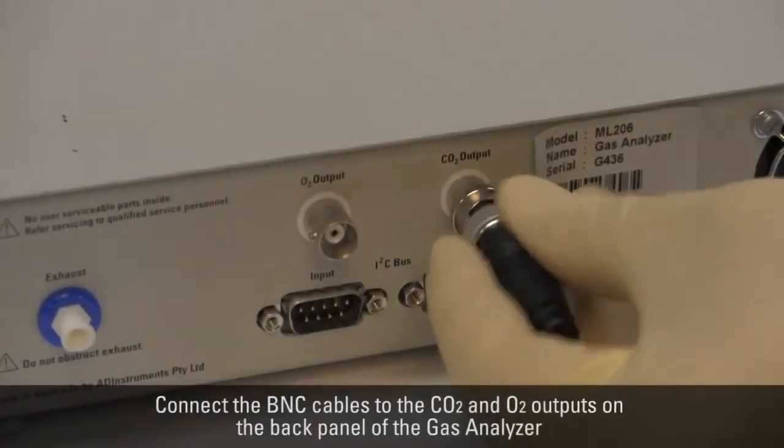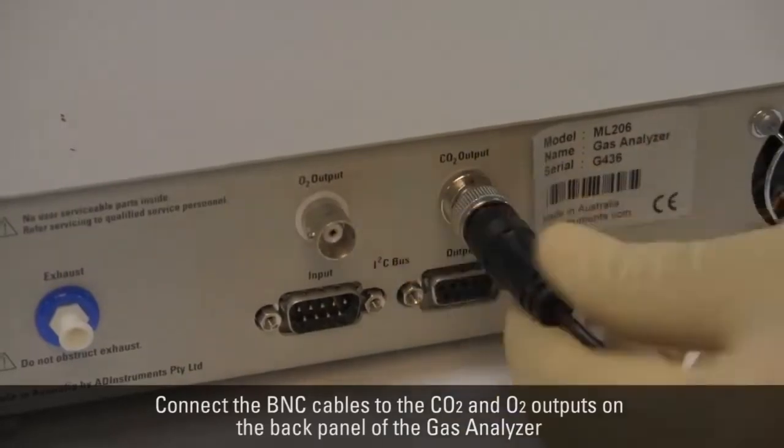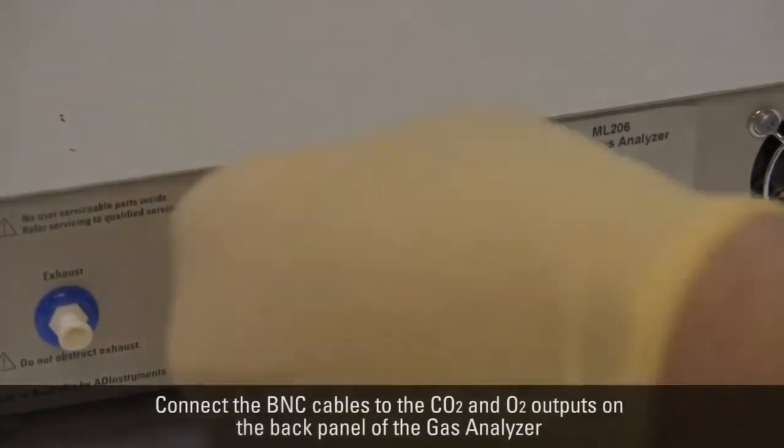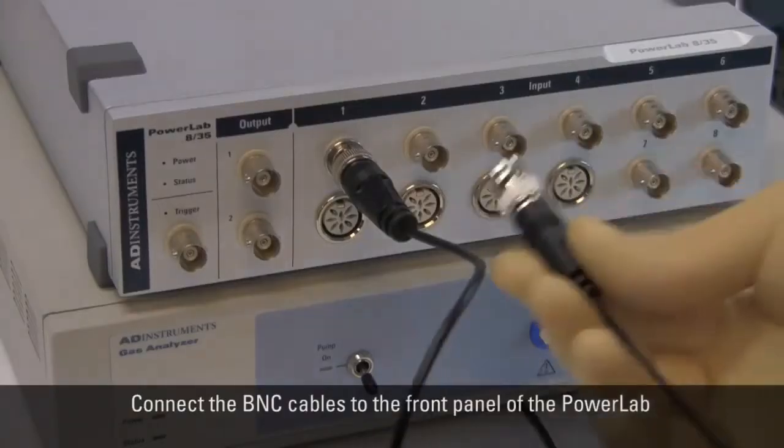Connect two B and C cables to the CO2 and O2 analog outputs on the back panel of the Gas Analyzer and the front panel of the PowerLab.